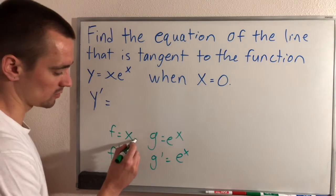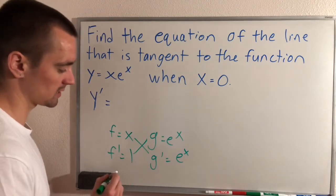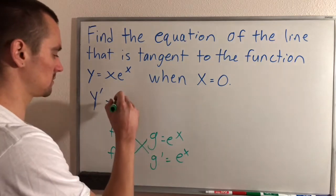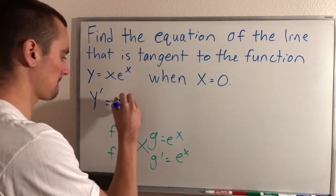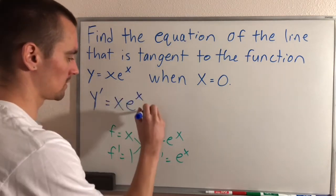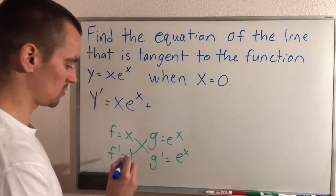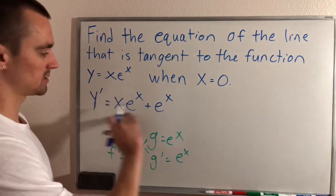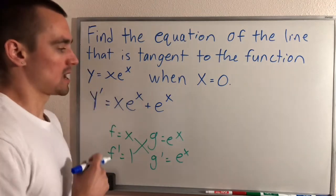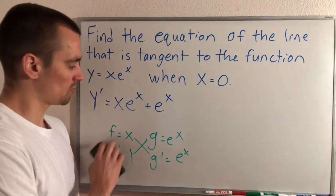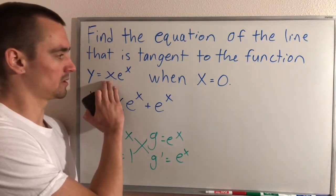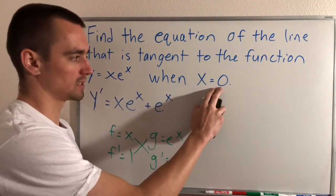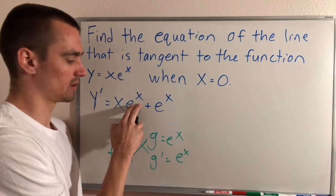Product rule says we're going to multiply these together and multiply those together and then add them up. So y prime equals x times e to the x, plus 1 times e to the x, which is just e to the x. So this is the derivative of our function, and now if we want to find the slope when x equals 0, all we have to do is plug 0 into our derivative for x.